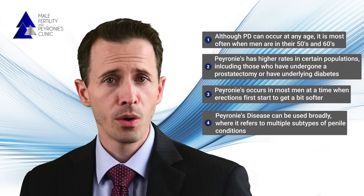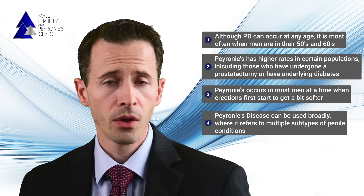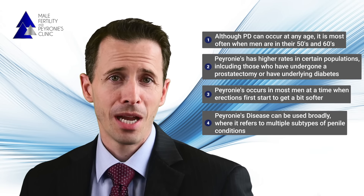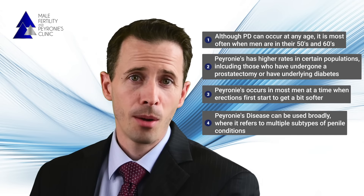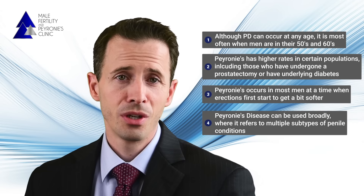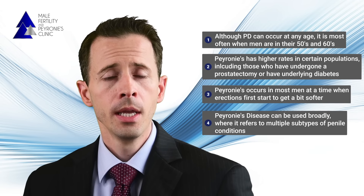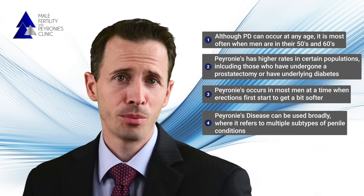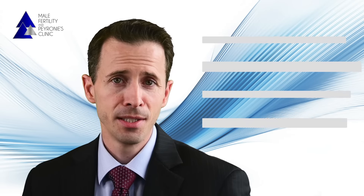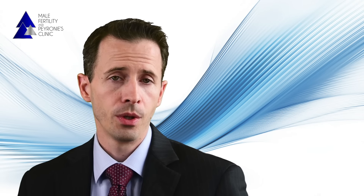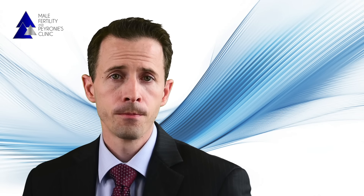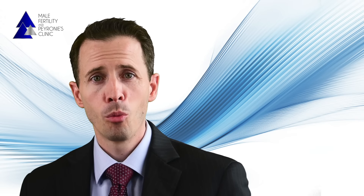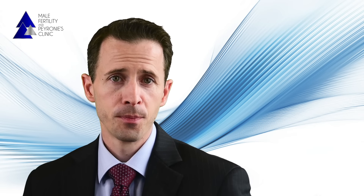Fourth, the term Peyronie's disease overall can be used broadly, referring to multiple subtypes of penile conditions including trauma-induced curvature in a 20-year-old, or it can be used more narrowly to describe the more classic presentation such as curvature and a nodule in a 50-year-old. This video will be referring to the latter, more narrow definition of Peyronie's disease.